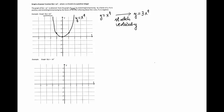Now to stretch this graph three times vertically, we'll multiply the y-coordinate of every point on the graph of the basic function by 3. So point (0, 0) stays where it was. Point (negative 1, 1) becomes (negative 1, 3), and point (1, 1) is transformed to (1, 3), and the graph is stretched. This is the graph of 3 times x to the fourth.